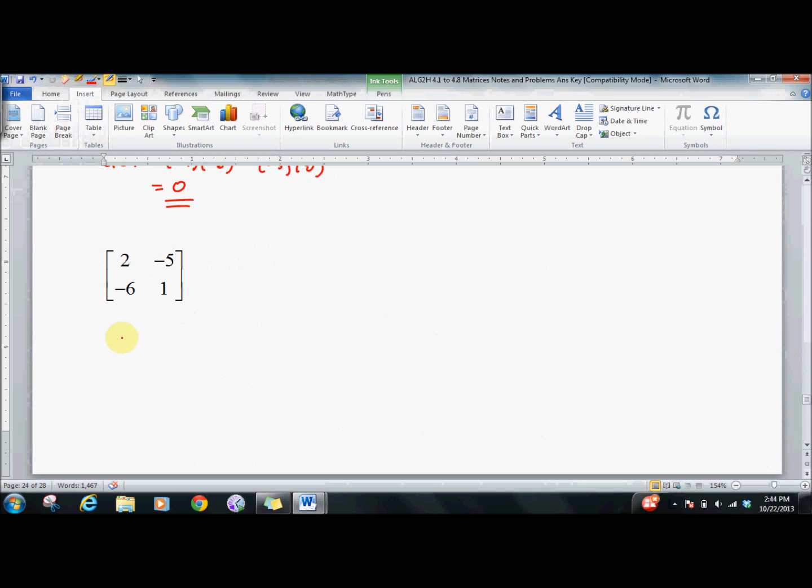So doing the last one, just take the determinant. 2 minus 30. It's negative 28. It's going to give us a big, ugly number. Go 1 divided by negative 28. Flip the 1 and the 2. Put negatives on the other two. I like to distribute it. Certain textbooks stop there, but I don't know why. I just like to crank it out. And that's it. You're done.